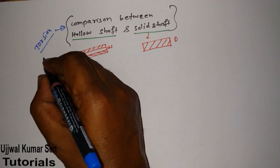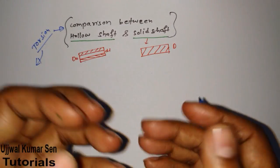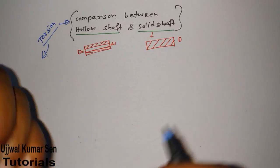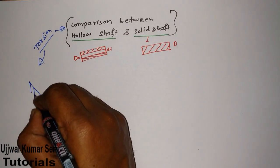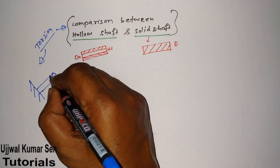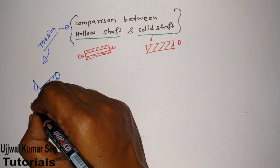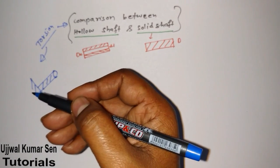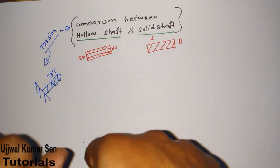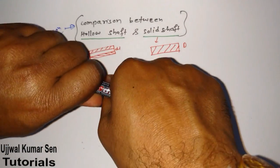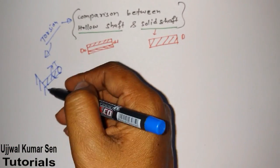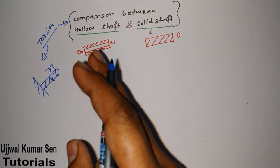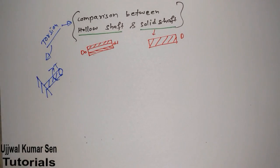What is torsion? There is a relation happening because of torque. Suppose this is a bar and one side is fixed — like a cantilever beam. If a torque is acting on it, then some twisting movement will happen, and that twisting moment is known as torsion.